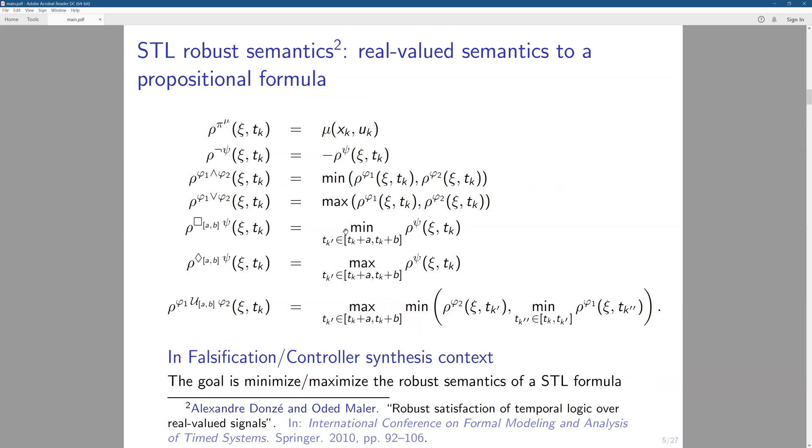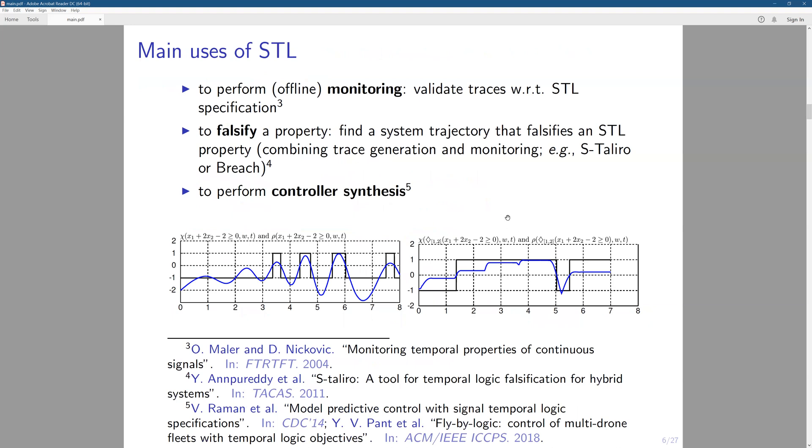So as long as the minimum value is greater than zero, then this requirement is always true on this a and b interval. So the similar thing is for the eventually operator. And the until operator is just a little bit more complex. So it consists of a composition of two operations of max and min. But the idea is the same. So this is just a way to use the min and max functions of this real value function rho to encode the STL semantics.